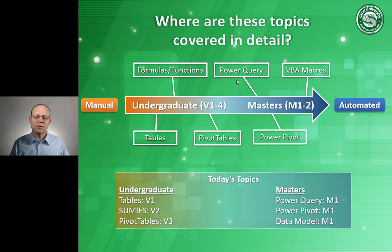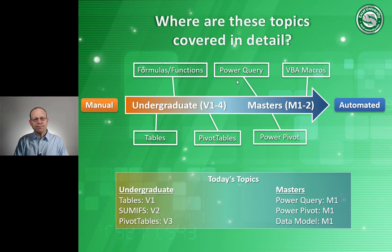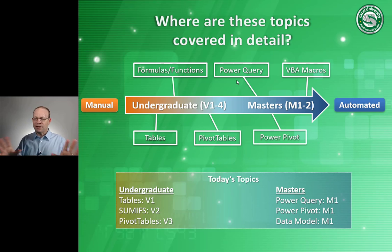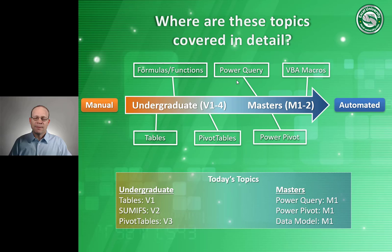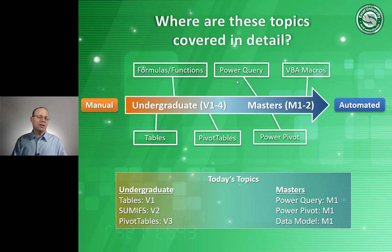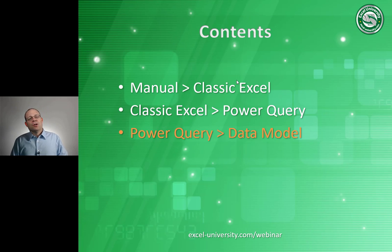The topics we talked about today fall into the Undergraduate and Master's tracks at Excel University. I have two main tracks: Undergraduate with four classes, and Master's with two courses. They're all in a progression that moves us from manual to automated. You don't have to start at the beginning — you jump in wherever you are on your journey. Maybe you've already got the classic Excel stuff and want to jump right into Master's for more technical topics. That's an idea of where all these topics fit in.